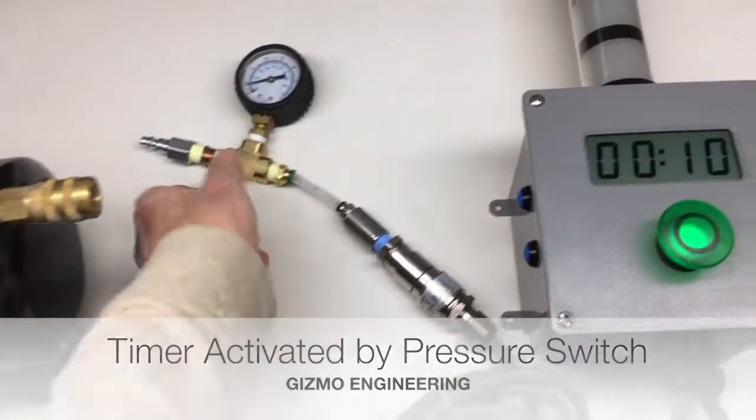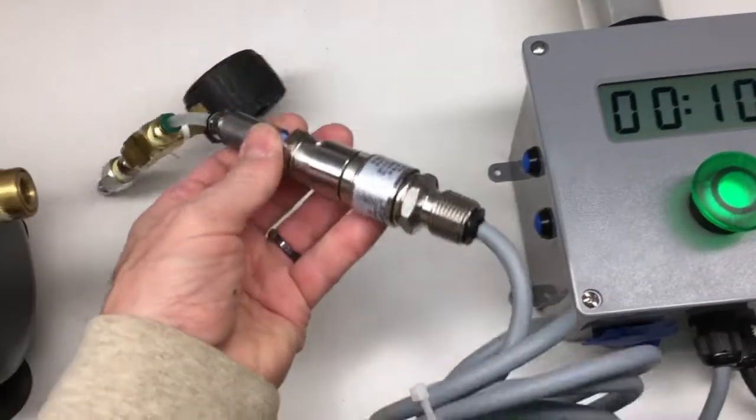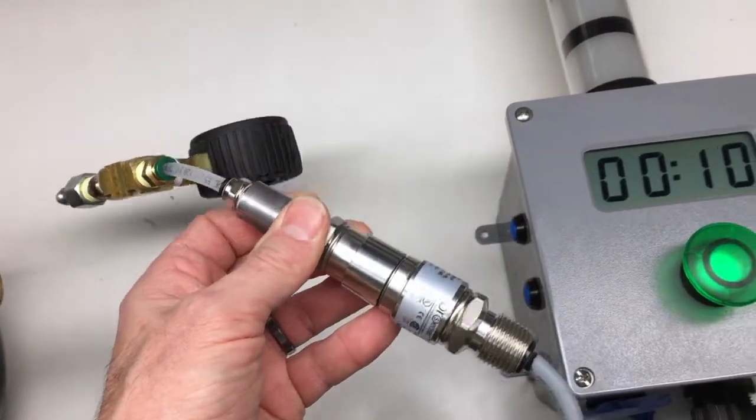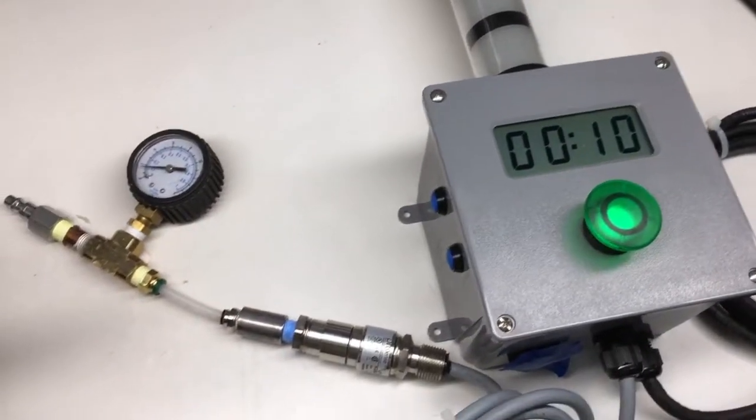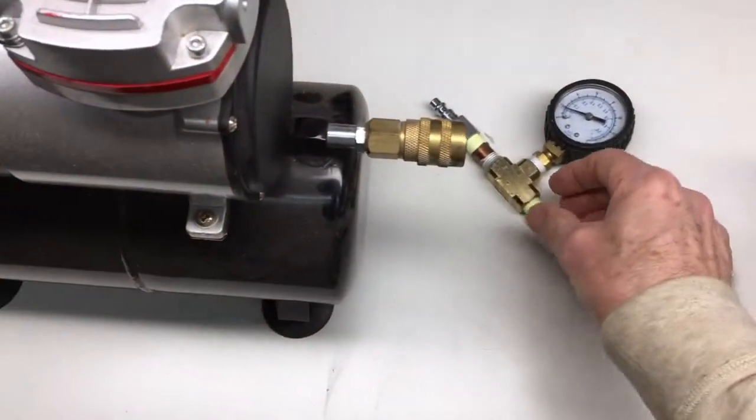So here we have a setup with a pressure switch supplied from our customer and I just want to show you that this pressure switch can activate our timer in the machine mode.